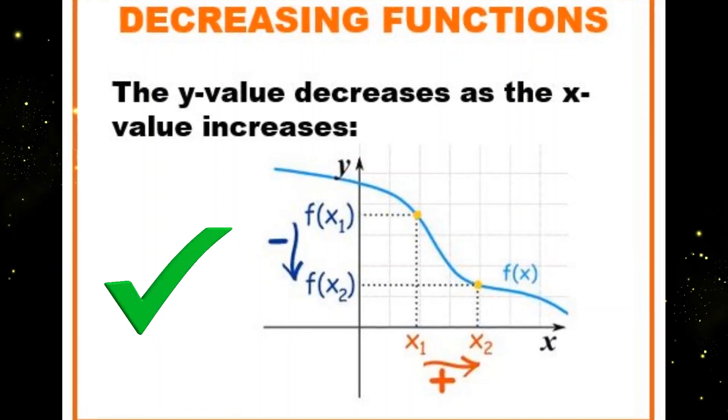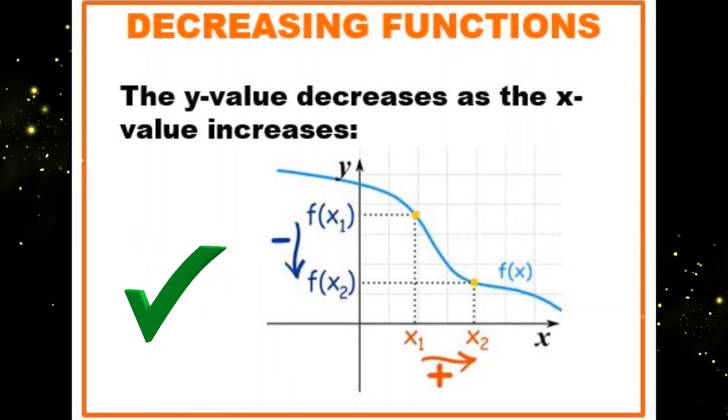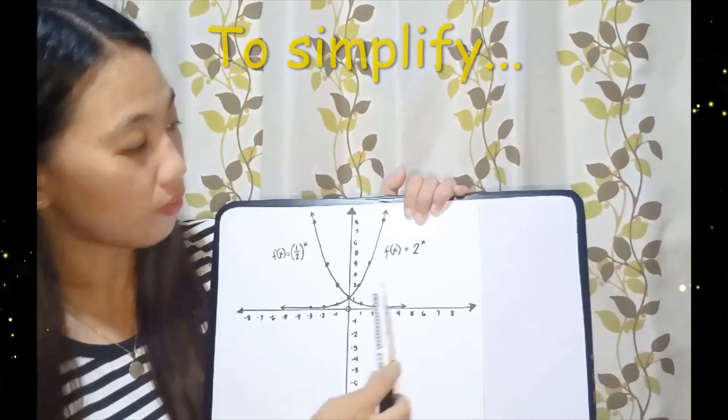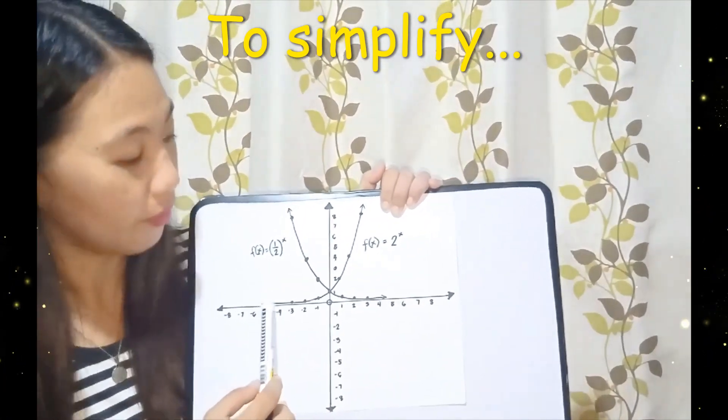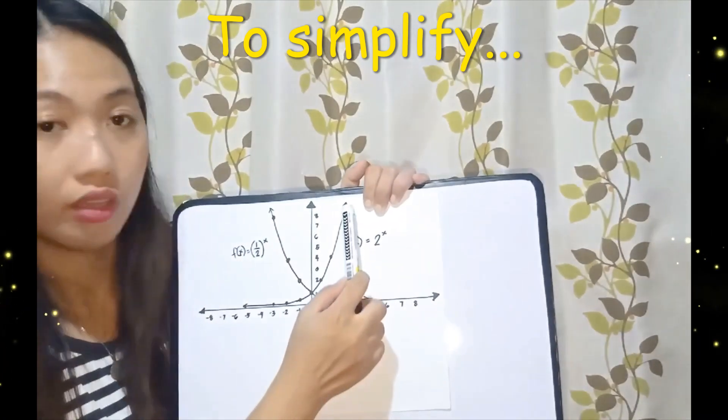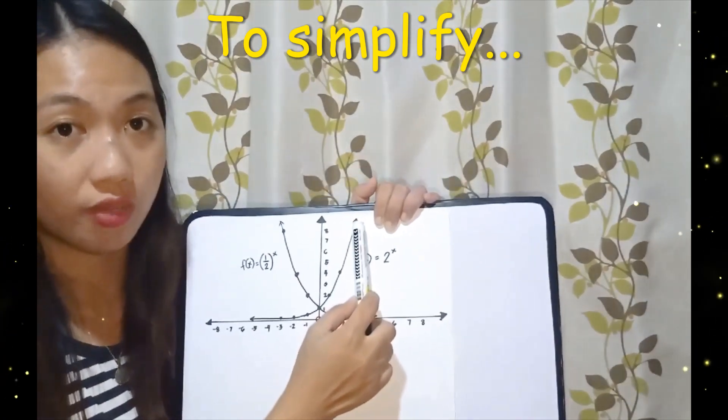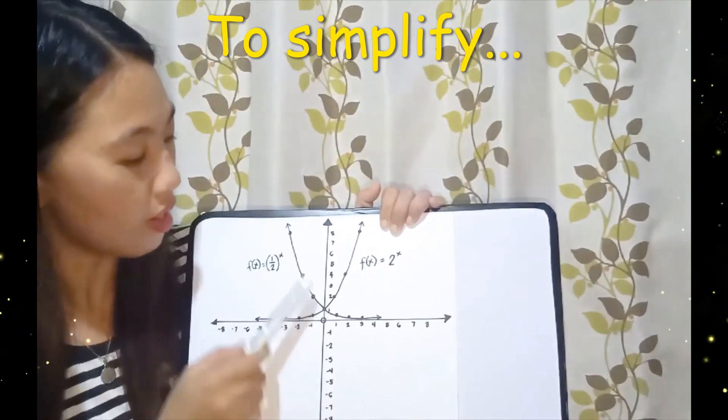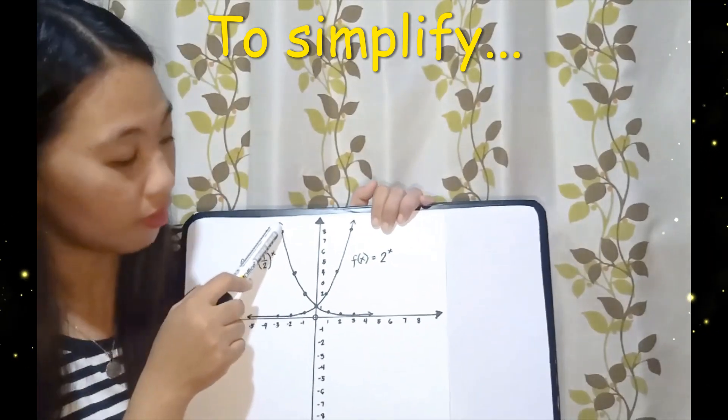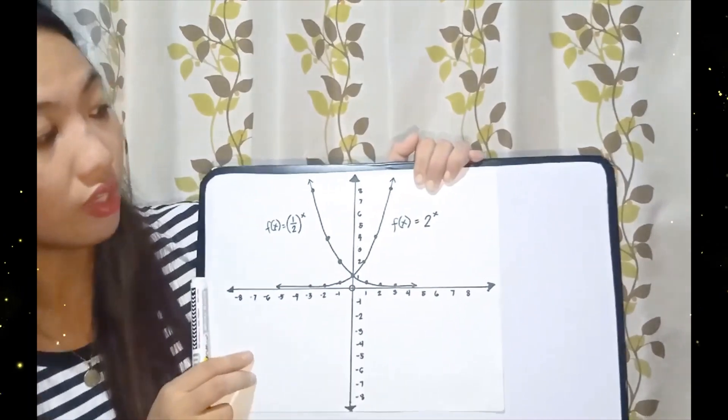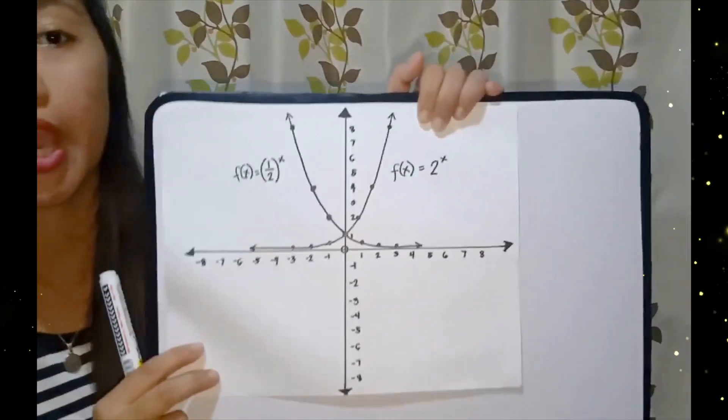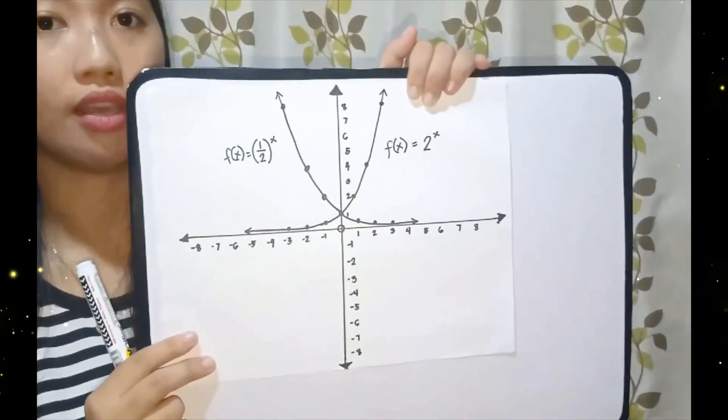The first behavior, from left to right going up, is increasing. The second behavior, from left to right, is a decreasing function. So that's the two behaviors of exponential functions.